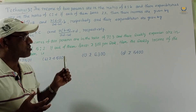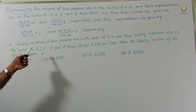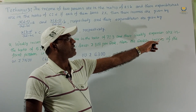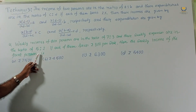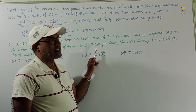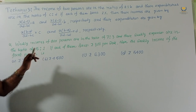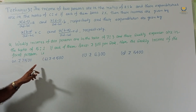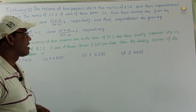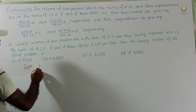Now let us consider one problem. The weekly incomes of two persons are in the ratio 7:3 and their weekly expenses are in the ratio 5:2. If each of them saves rupees 300 per week, then the weekly income of the first person is — options: 7500, 4500, 6300, or 5400. Which is the correct option?